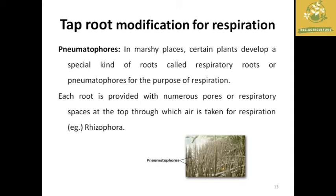There are also tap root modifications for respiration known as pneumatophores. These are mainly found in marshy places where plants develop special roots for respiratory function. They are mostly found in mangrove forest regions, where roots grow upward out of the soil to absorb air through the respiration process. Example: Rhizophora.